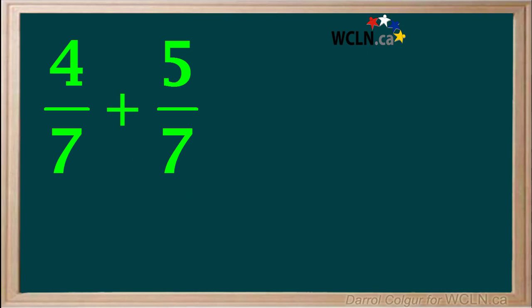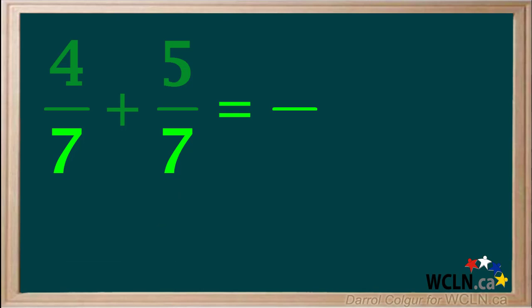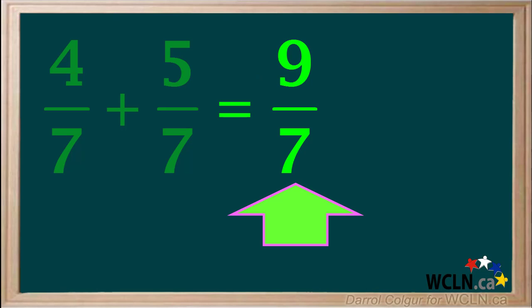Let's do another example of adding. We have 4 sevenths plus 5 sevenths. We start by looking at the denominators — these fractions have a common denominator of 7, which means we can add them as they are. The sum will have a denominator of 7. To find the numerator, we add up the numerators 4 plus 5 to give us a total of 9. So the answer is 4 sevenths plus 5 sevenths equals 9 sevenths.